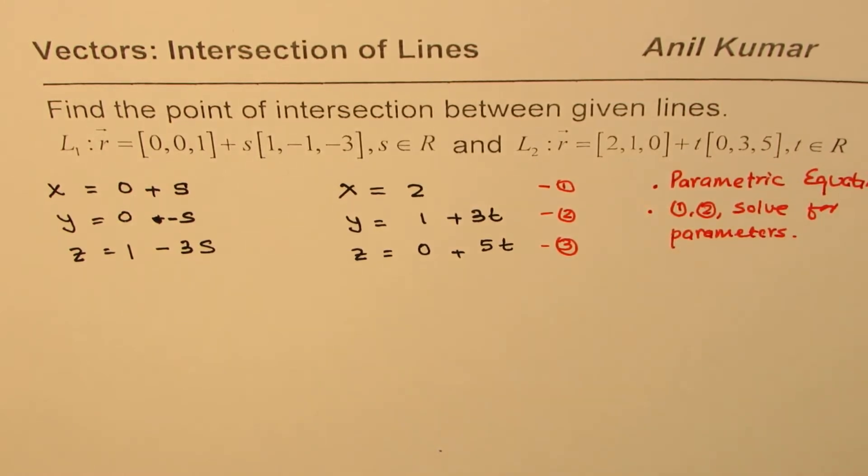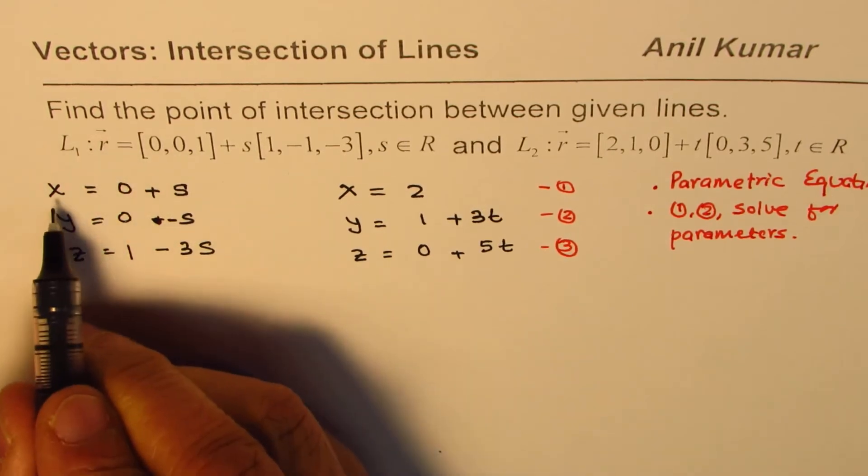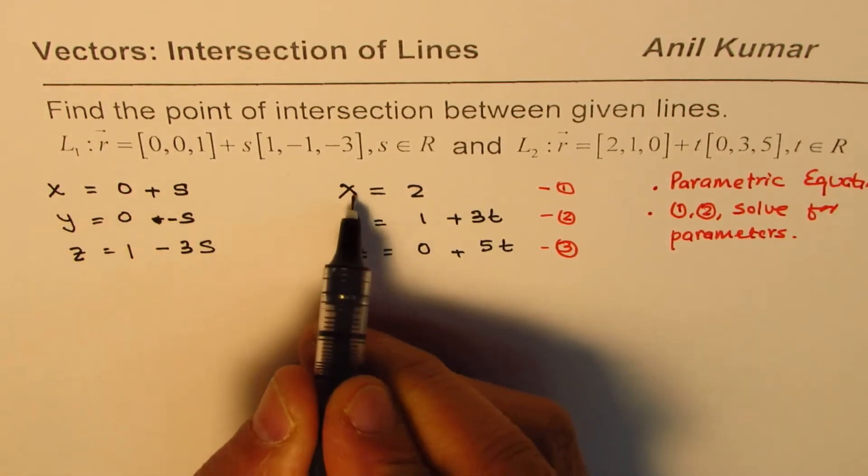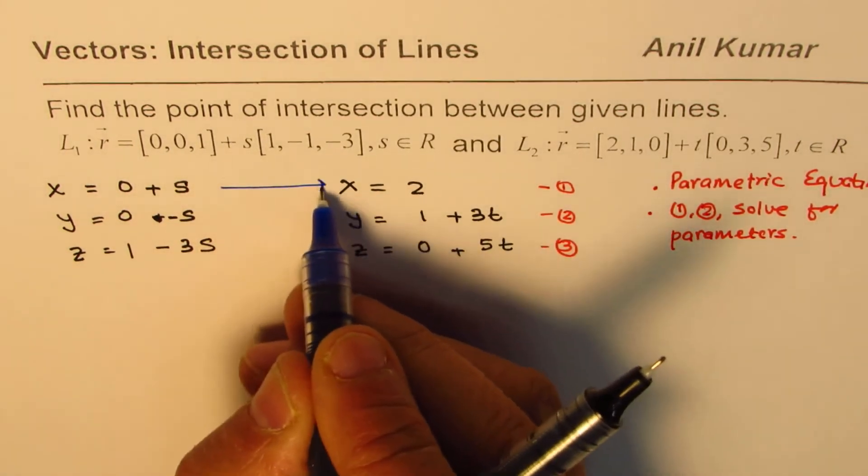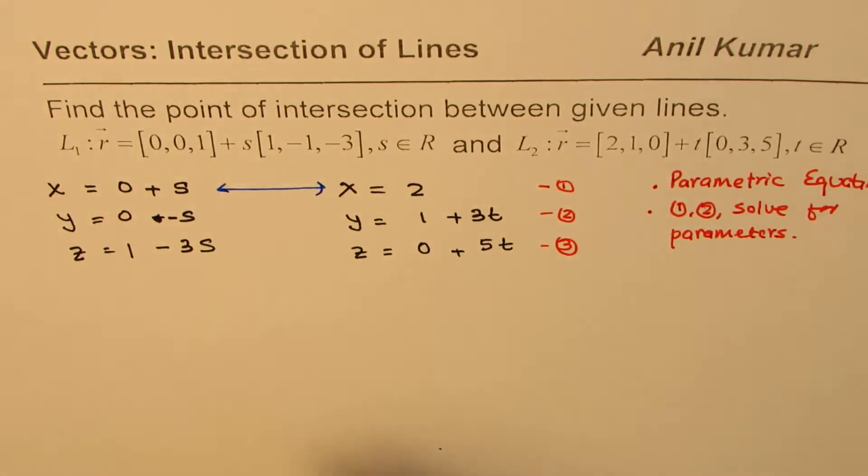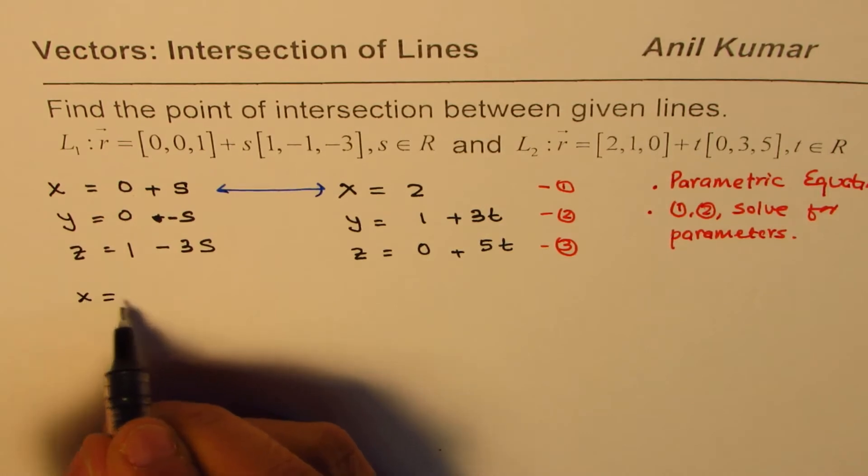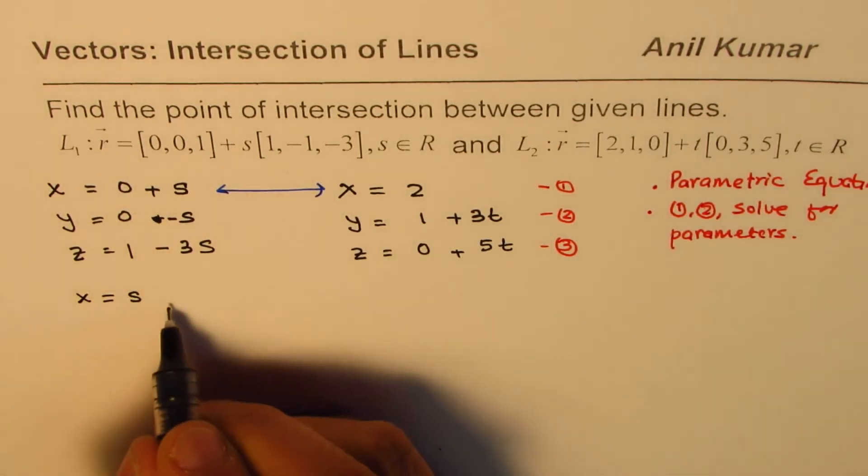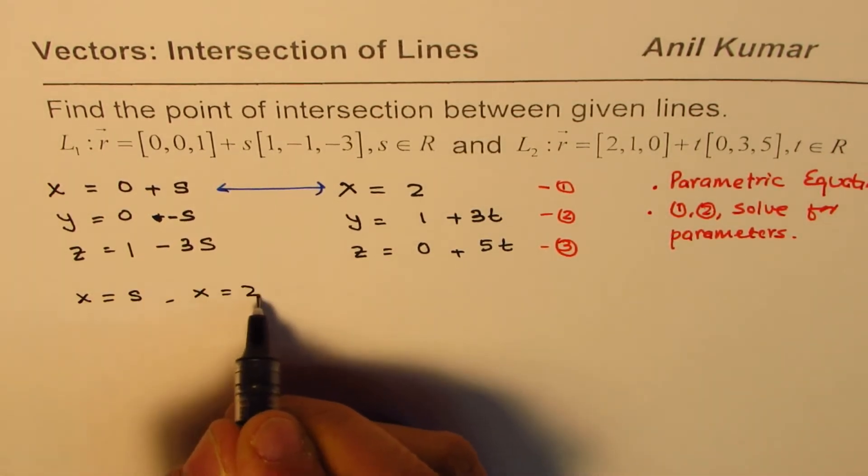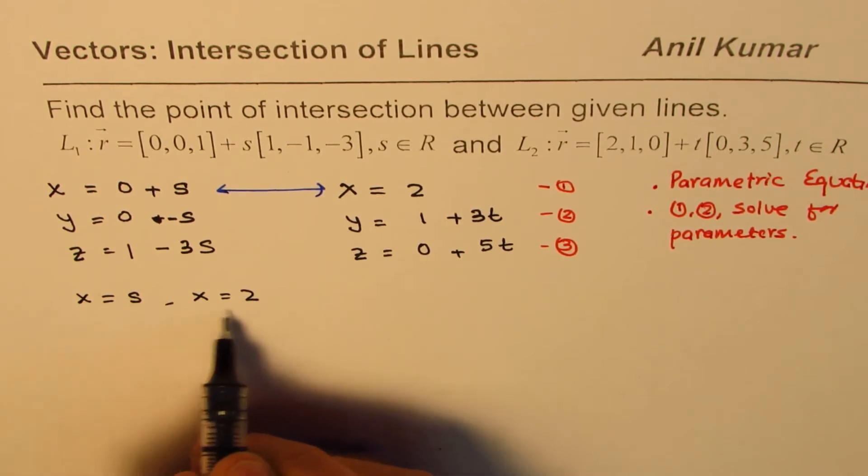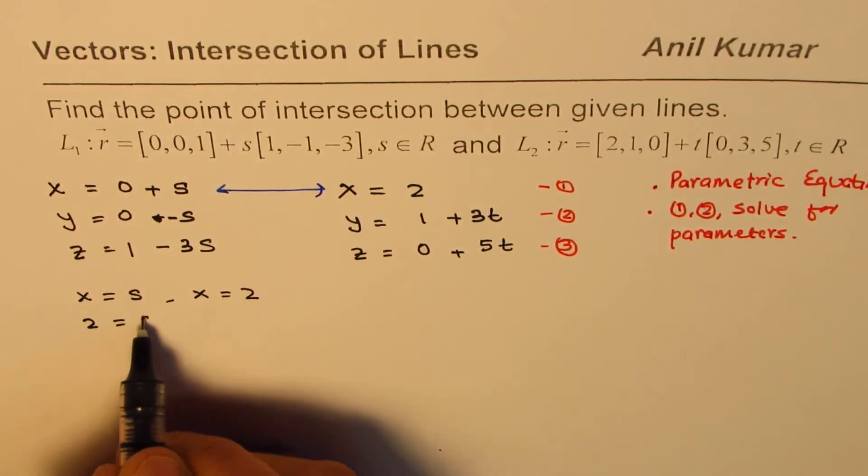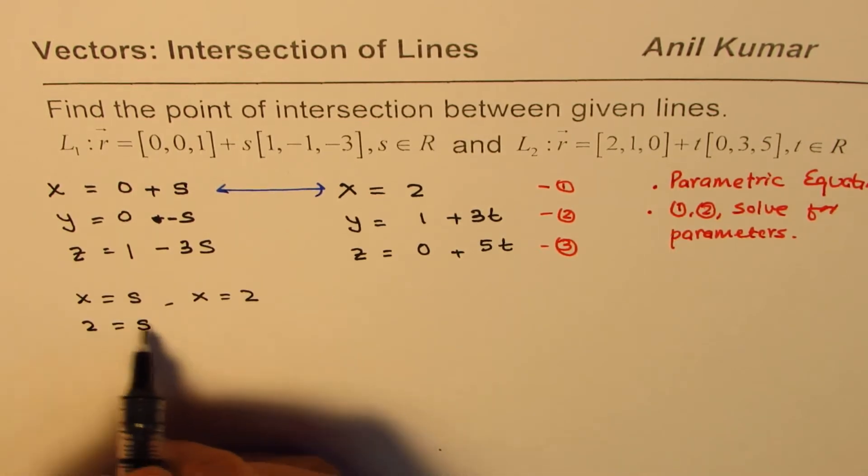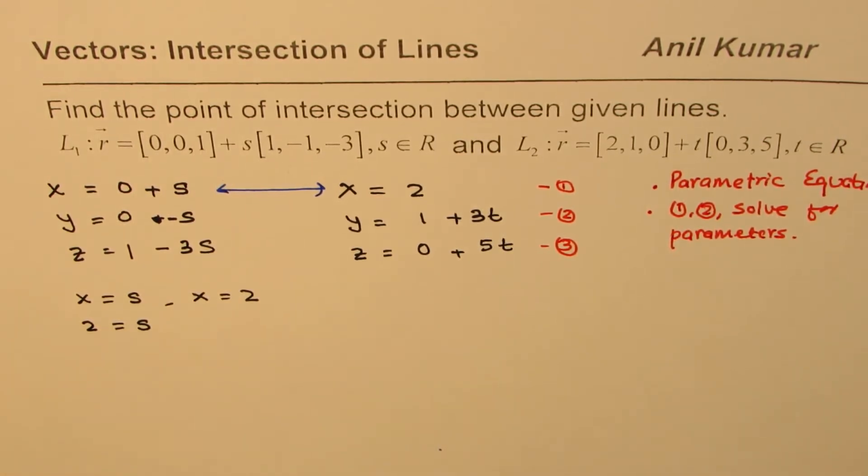So we have x equals s and x equals 2. If you relate these two, which says x equals s and we have x equals 2, so we could write from here that if we substitute 2 here, we get 2 equals s. So from here, we get the value of s. So let me call this equation as 3.